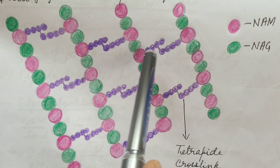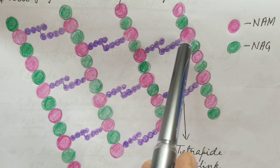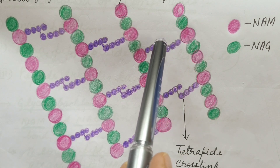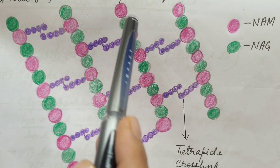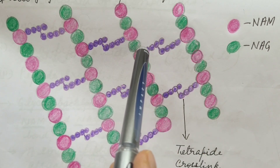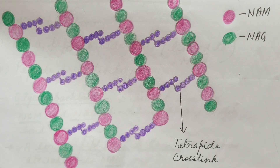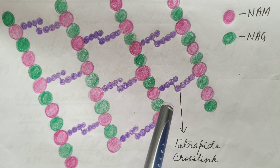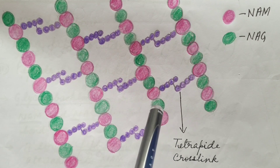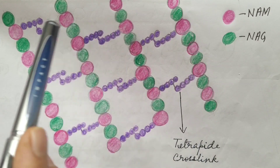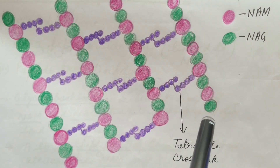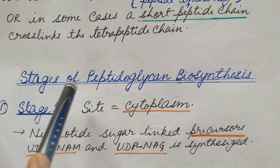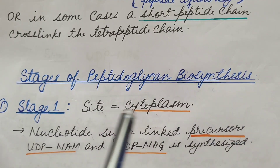Peptide side chains are attached to the carboxylic group of NAM, and the peptide side chains of adjacent glycan backbones are cross-linked — known as tetrapeptide cross-linking. This cross-linking is either direct or by peptide interbridge, resulting in the mesh-like peptidoglycan polymer. Now let us see the stages of peptidoglycan biosynthesis.